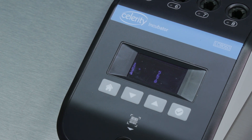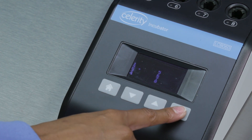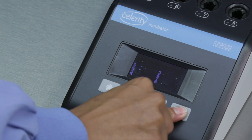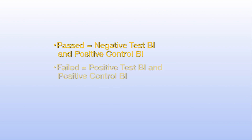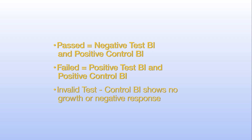The testing passes if the process BI is negative for growth and the control BI is positive for growth. The testing fails if the process BI is positive for growth. If the control BI demonstrates a negative response or no growth, the results are invalid and testing must be repeated.